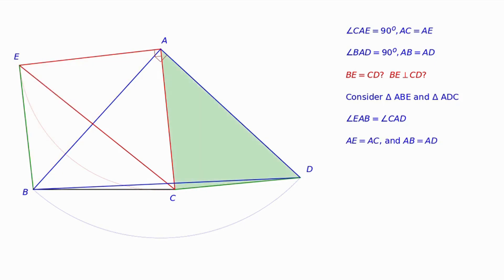Also by construction, line segments AE and AB are equal to AC and AD respectively. They are sufficient to conclude that the triangles ABE and ADC are congruent.